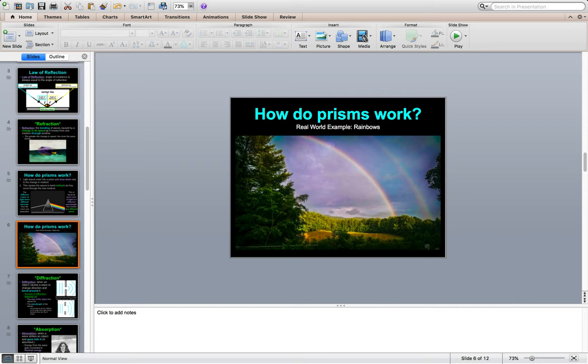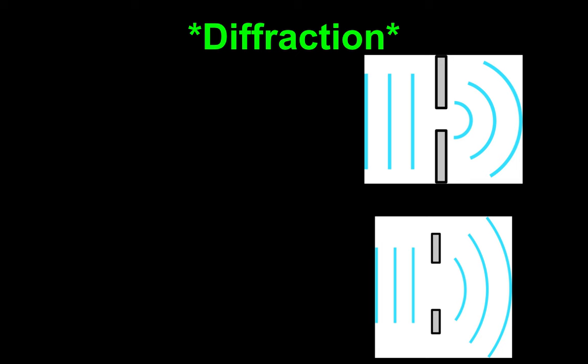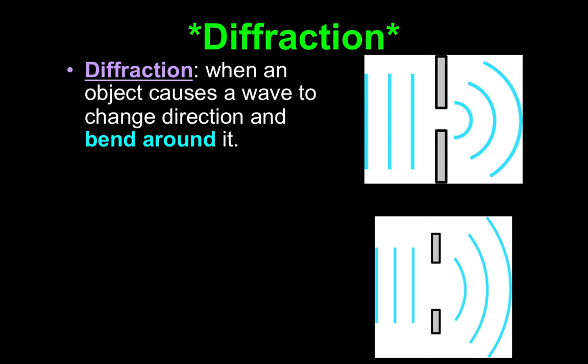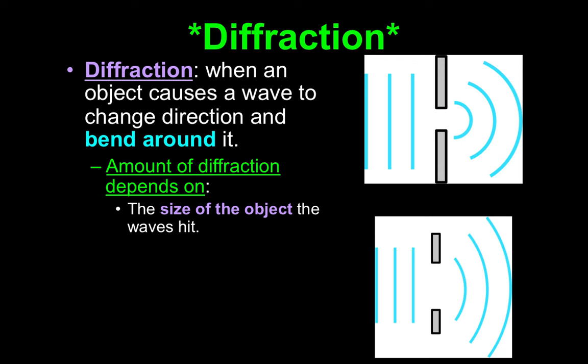Okay, that video pretty much combines everything we just talked about before that slide. Moving on — another vocabulary word you will see on your test, also added to Quizlet: diffraction. Diffraction is when an object causes a wave to change direction and bend around it. The amount of diffraction depends on the size of the object the wave hits and the wavelength of the waves. To refresh your memory: wavelength is the distance between two waves.